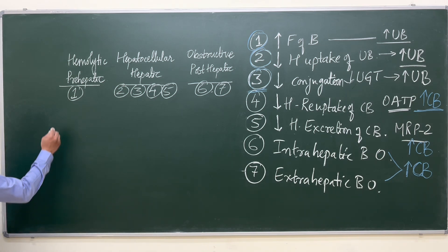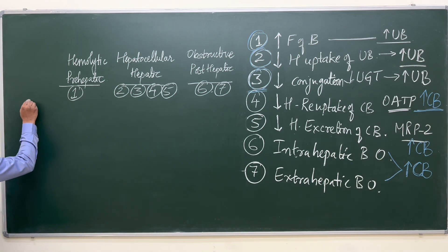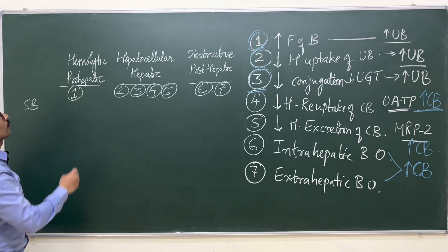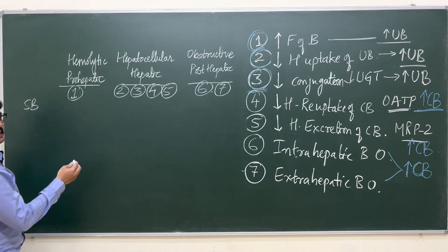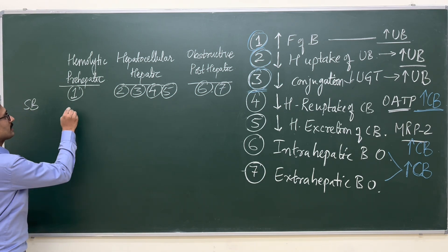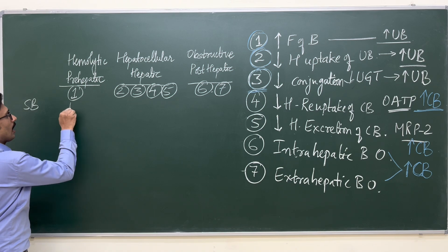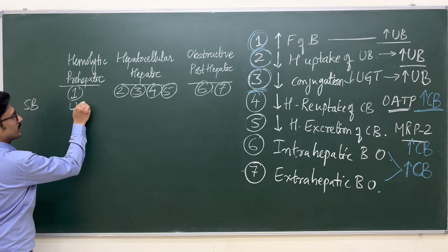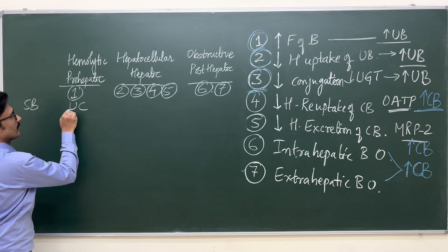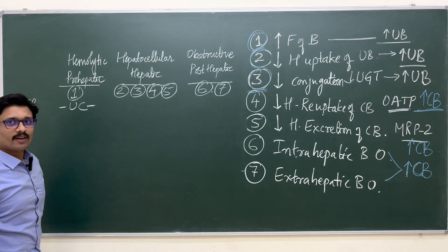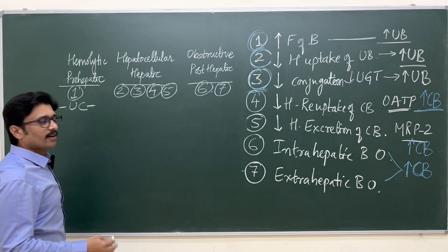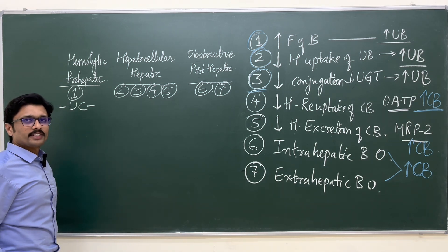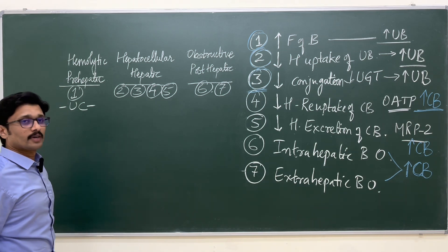The first feature is what type of serum bilirubin levels are increased. In case of Hemolytic jaundice, the increased serum bilirubin levels are unconjugated, because they are not entering the liver and not getting conjugated when they are formed in excess.